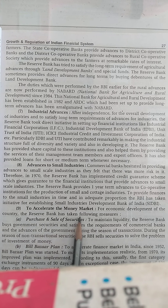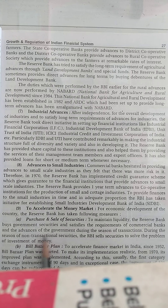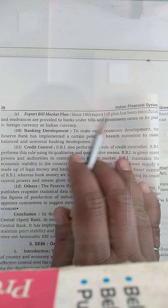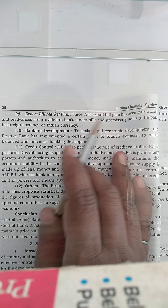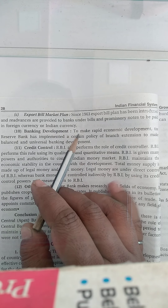The ninth function is to accelerate the money market. The money market deals with short-term loans — less than one year period. Its instruments include treasury bills, commercial paper, certificate of deposit. RBI carries out purchase and sale of government securities. The bill bazaar plan and the export bill market also exist. Since 1963, the export bill plan has been introduced, and re-advances are provided to banks under bills and promissory notes to be paid in foreign currency or Indian currency.